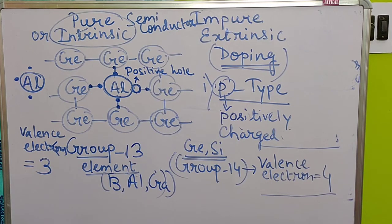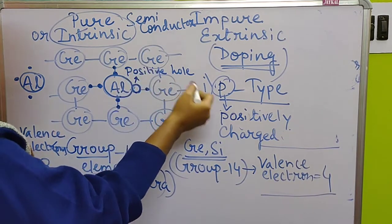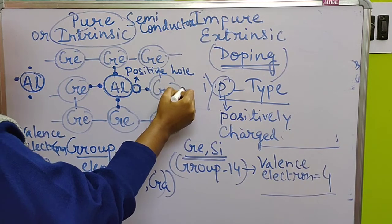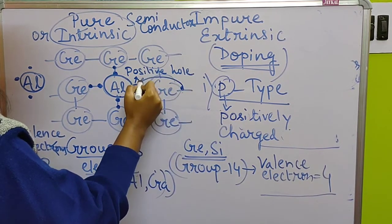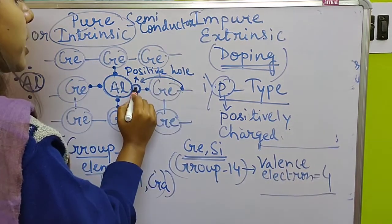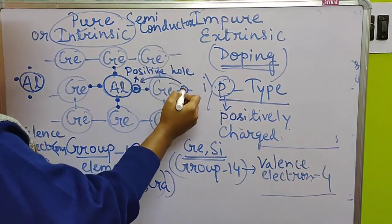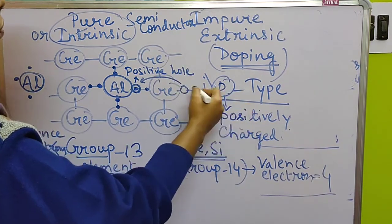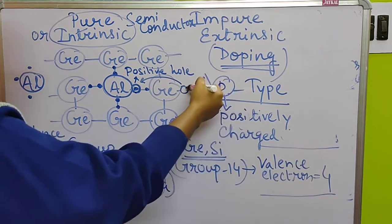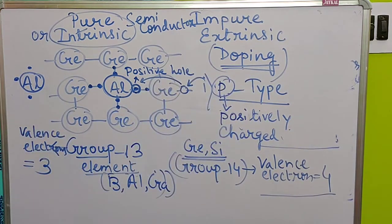This positive hole conducts electricity: an electron from an adjacent germanium atom moves to fill the positive hole, creating a new vacancy (positive hole) at the adjacent position. Then another electron fills that vacancy, and so on. By this way, the holes move from one side to another side, conducting electricity through the positive holes. That is why these are called P-type semiconductors.